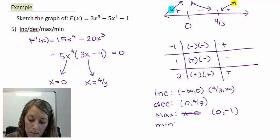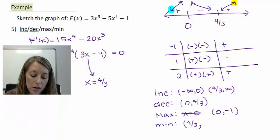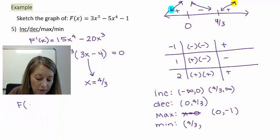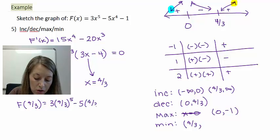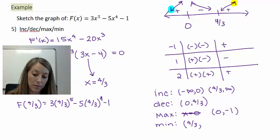We also know that we have a minimum at 4/3. So if I figure out what f(4/3) is, that tells me what my minimum value is. So all I need to do is plug in 4/3 into the original function.